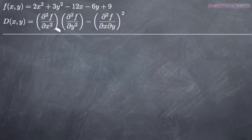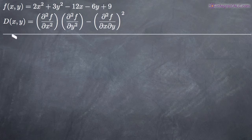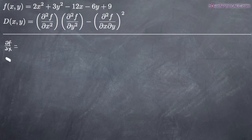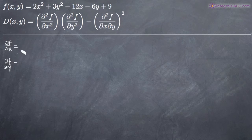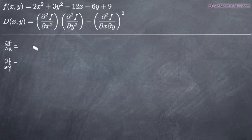What we need to do first is take the first-order partial derivatives of the function f of x, y. We're going to take the partial derivative of f with respect to x and the partial derivative of f with respect to y. I'm going to assume you know roughly how to take partial derivatives and move through it quickly.